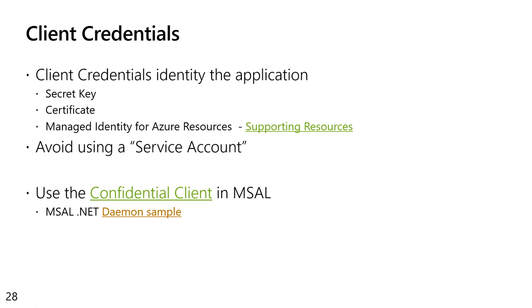You can use secrets — I typically use them during demos because it's so easy. But it's also easy to accidentally check in your secrets to your GitHub repo, which you don't want to do. Secrets have to be secret — they're like a really fancy long password. You can also use managed identities from Azure to authenticate your app. We advise people not to use service accounts — don't store a username and password somewhere to run background jobs. An administrator might force MFA or a password reset, and if your background application only has a username and password, it will break. So you're going to use the confidential client in MSAL.